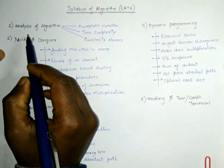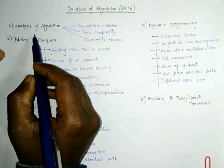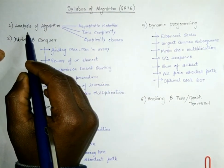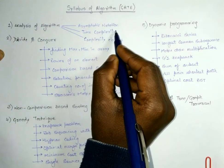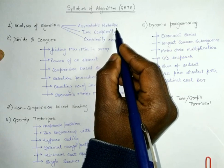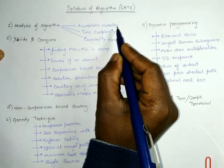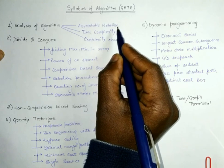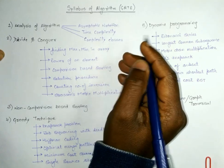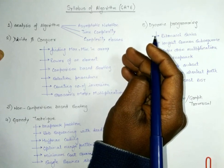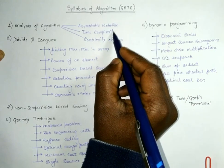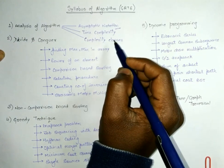The first thing which comes is analysis of algorithm. In the analysis of algorithm, we have to deal with asymptotic notation. There are three notations mainly - big O, omega, and theta. Apart from that, there are two more notations: little o and little omega. We have to cover these things in asymptotic analysis.